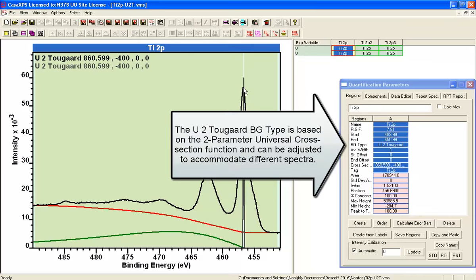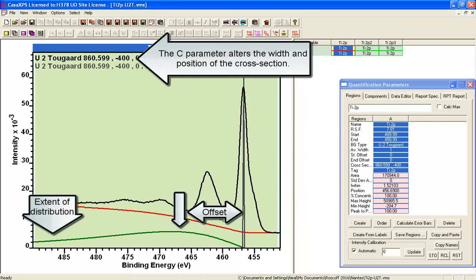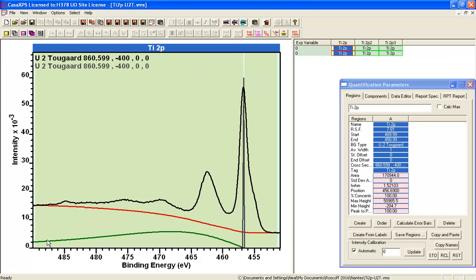This is a U2 2GAR background with a C parameter of 400. And this produces a cross section which is broad, asymmetric, and the maximum is away from the titanium 2P peaks.